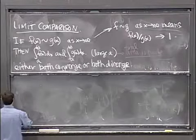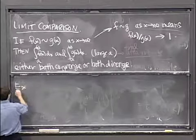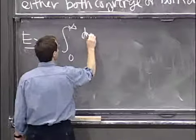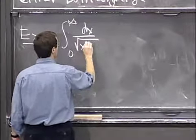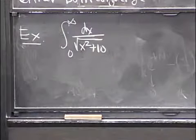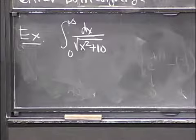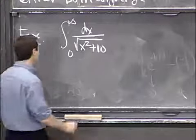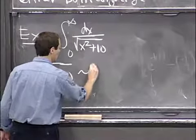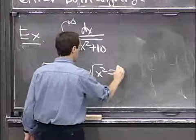Let's just do a couple of examples here. If you take the integral from 0 to infinity dx over the square root of x² plus 10, then I claim that the square root of x² plus 10 resembles the square root of x², which is just x.